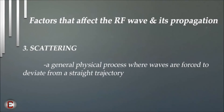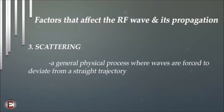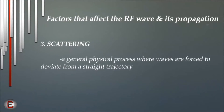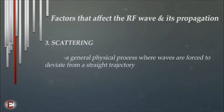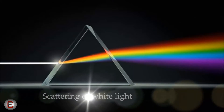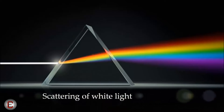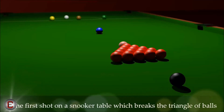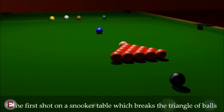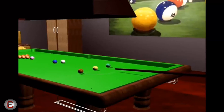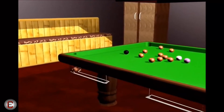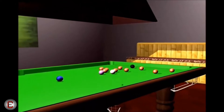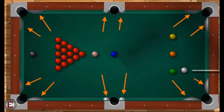Scattering is a general physical process where waves are forced to deviate from a straight trajectory. Scattering can almost be described by the term multiple reflections. A good analogy would be the first shot on a snooker table which breaks the ball triangle. Consider the white ball as the initial wave and the other balls moving in different directions as parts of the initial wave that are scattered. Here is a diagram displaying that phenomenon.